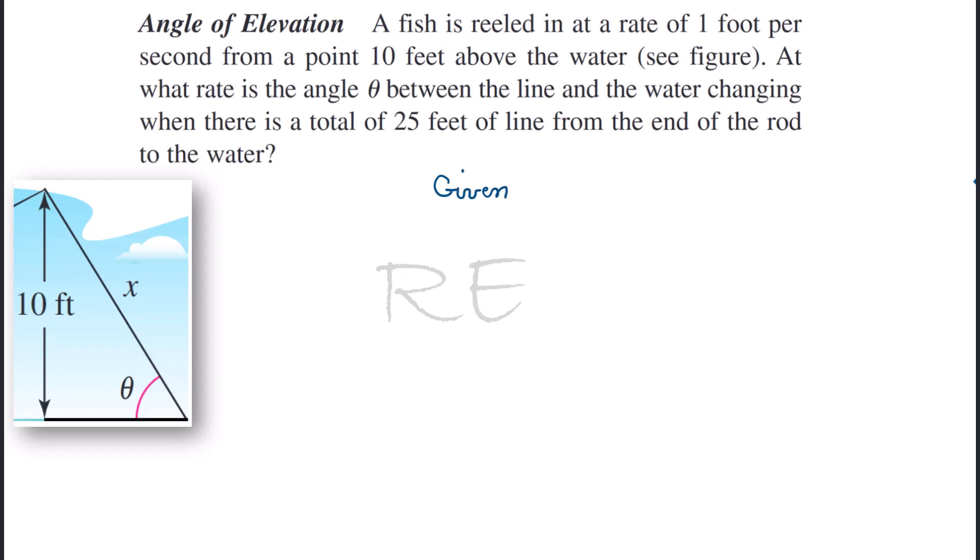What is given? Well, besides the height that's 10 feet, we have the rate of change of the line, dx/dt. Since the fish is being reeled in, we're going to say it's negative 1 foot per second.